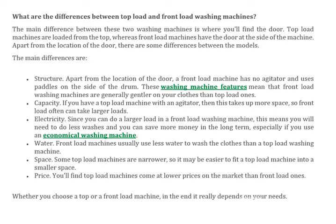Apart from the location of the door, a front load machine uses paddles on the side of the drum. These features mean that front load washing machines are generally gentler on your clothes than top load machines. This means your clothes are treated gently and are safer in a front load machine.